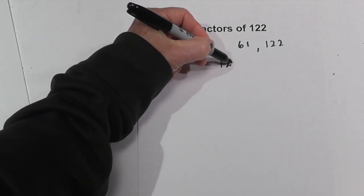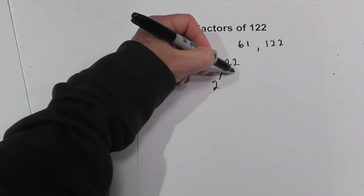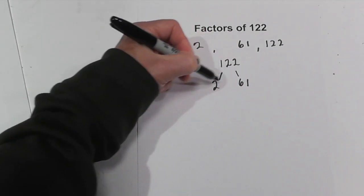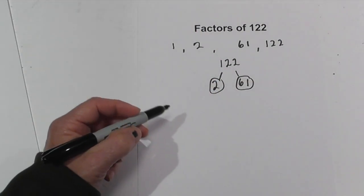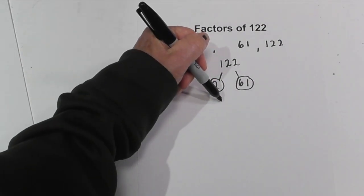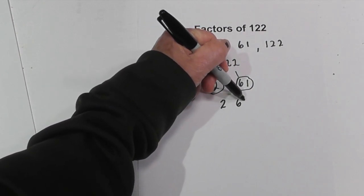And if you'd like to know the prime factors, you can create a factor tree and you can go 2 times 61. Circle the 2 because it is prime. Circle the 61 because it is prime. So the prime factors of 122 are 2 and 61.